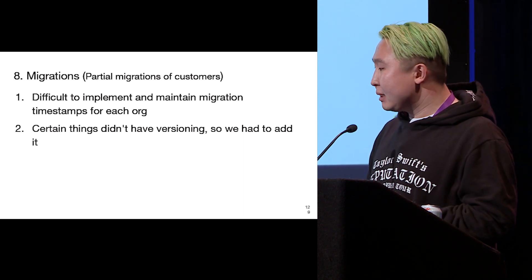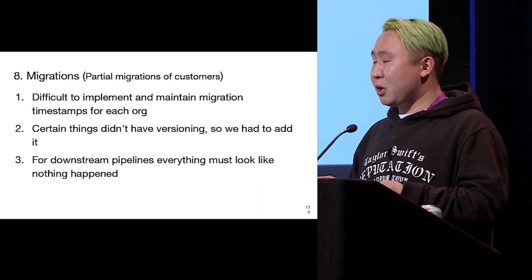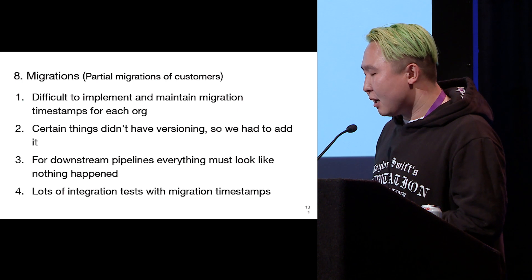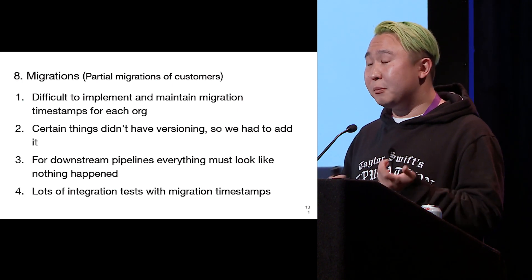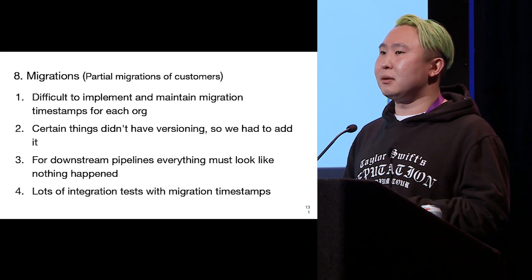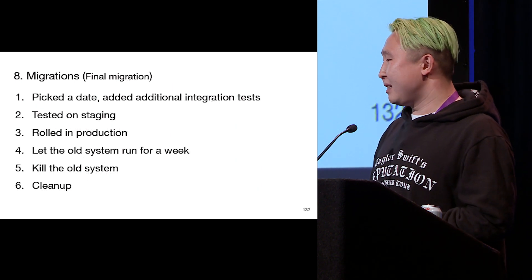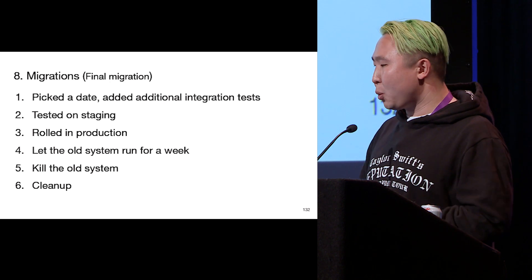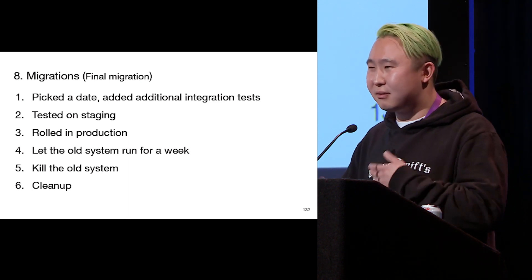It was difficult to implement and maintain migration timestamps for each org. Certain things didn't have versioning, so we had to add it. For downstream pipelines, everything must look like nothing happened — you can't touch every pipeline, you have to create some mechanism that works for that. We had to do lots of integration tests with migration timestamps, and the integration tests we already had helped us. For all the pipelines we have, we have integration tests, so it was pretty easy to check if migration timestamps would work. After that, we picked a date, added additional integration tests, tested on staging, and rolled to production. We let the old system run for a week, then killed it and cleaned up old code.